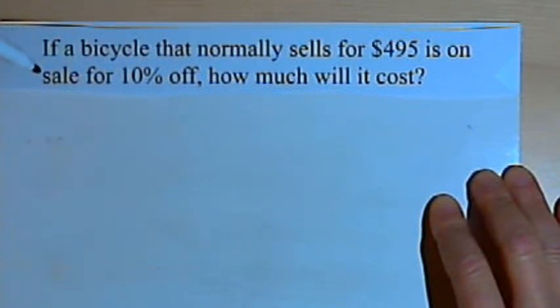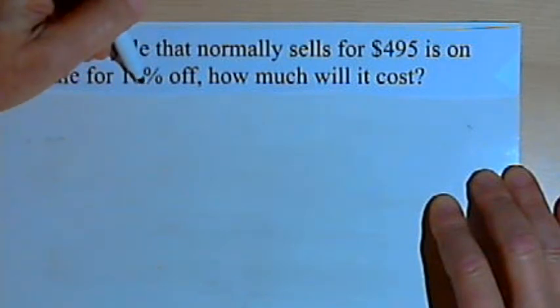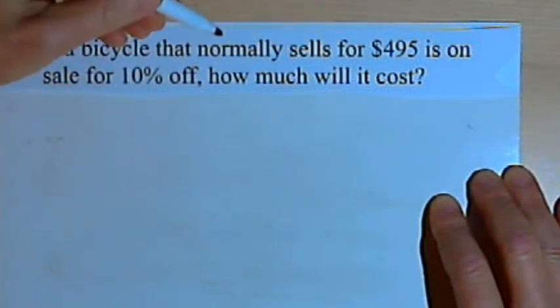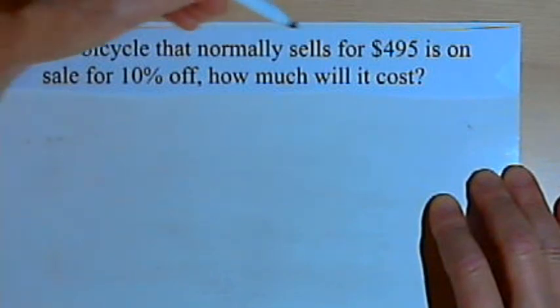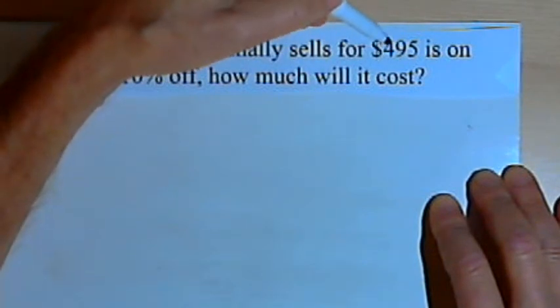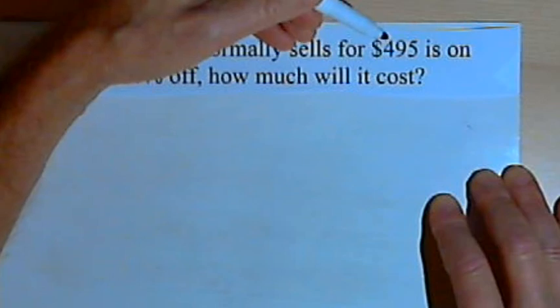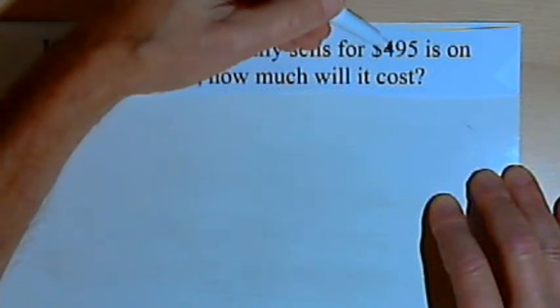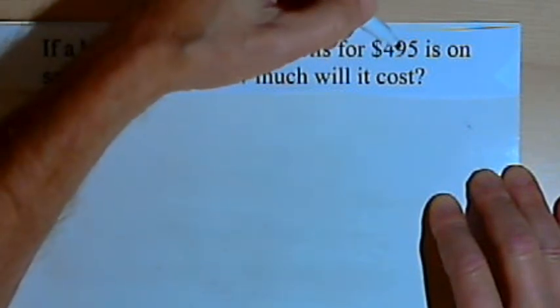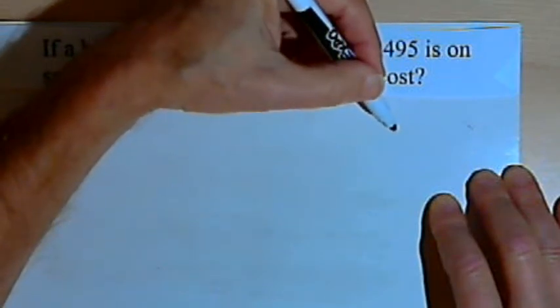We've got to do this problem in two steps. First we've got to find out how much 10% of $495 is. That's going to be the discount, the amount that's subtracted from the original price. And then what we'll do is subtract that 10%, whatever number we find, from the original price, and that will tell us the sales price.